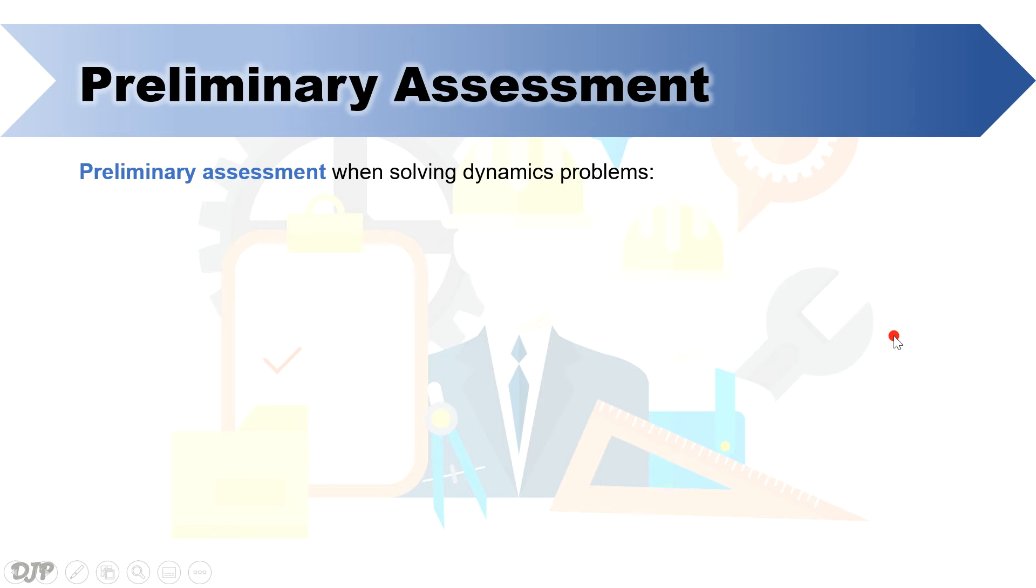First, do geometrical dimensions matter? This question will lead you to what idealization to use. It can be either particle or rigid body. If the answer is yes, the object is a rigid body. If the answer is no, the object is considered as a particle.